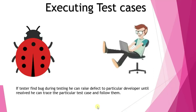Once the tester confirms it is a real defect, they discuss it with the on-site coordinator, developer, team lead, and client. They then raise a defect report to the particular developer, attaching artifacts and screenshots. Priority is determined by the developer, while severity — how much the defect impacts the module or the whole system — is defined by the tester.